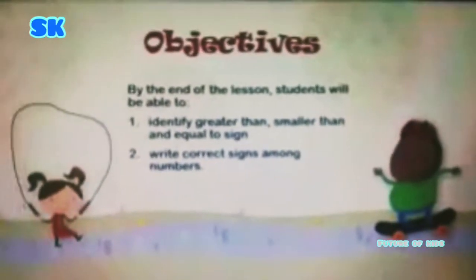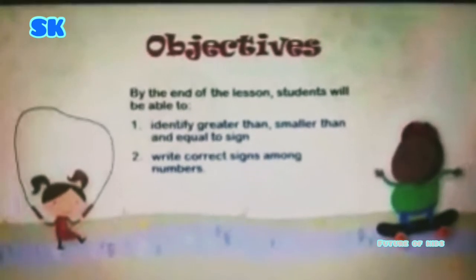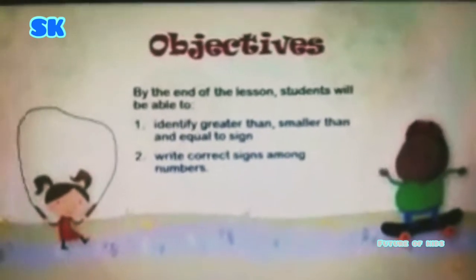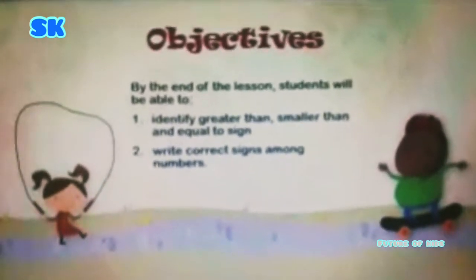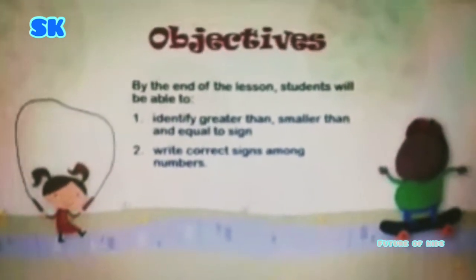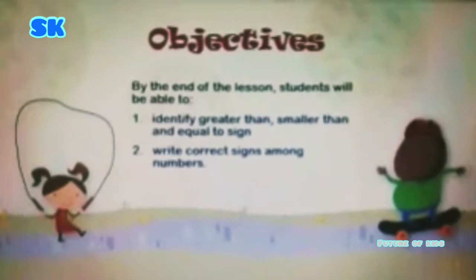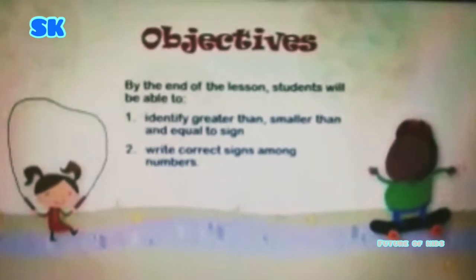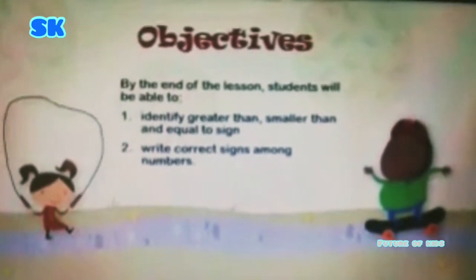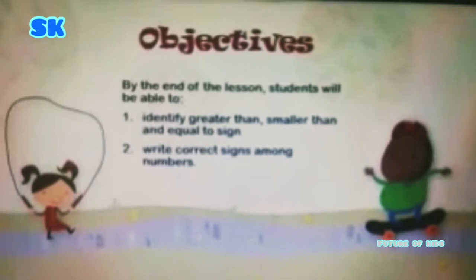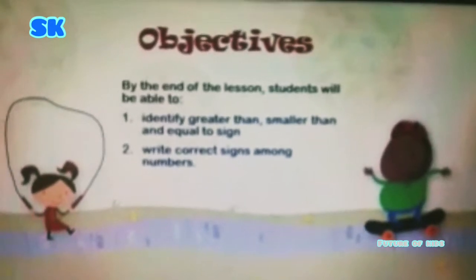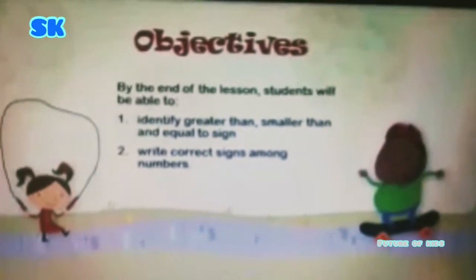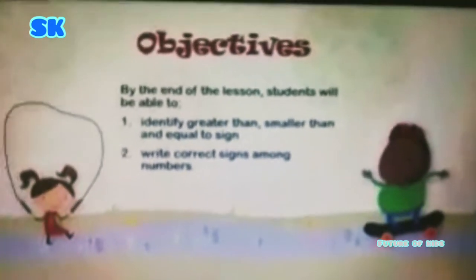Here are the objectives — what we are going to do in this lesson. By the end of the lesson, you will all be able to identify greater than, smaller than, and equal to signs, and you will be able to write the correct signs among numbers.